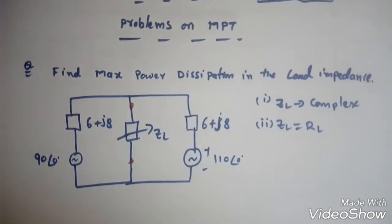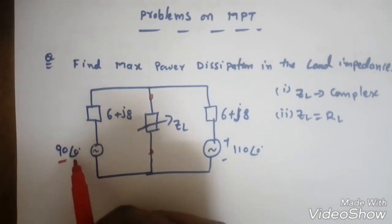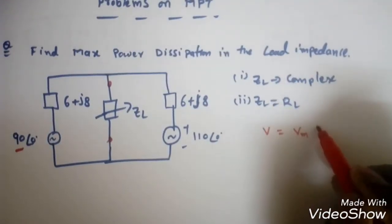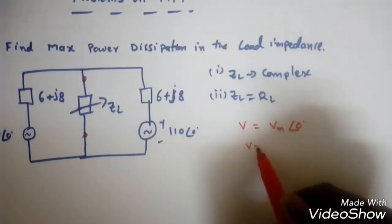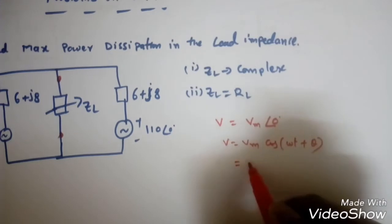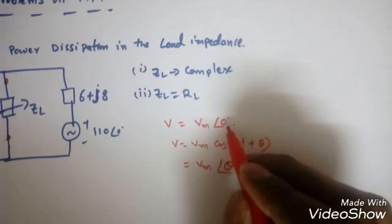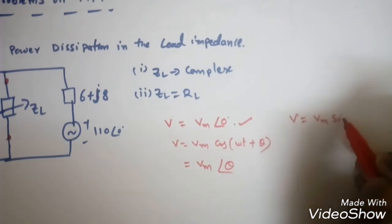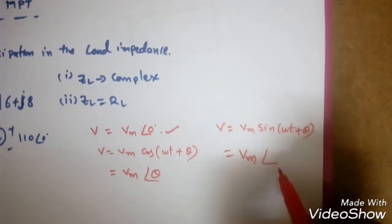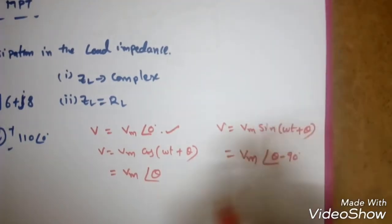To solve this type of question, first we need to find the Thevenin equivalent model. Whenever an AC source is given, remember: if V = Vm cos(ωt + θ), this is represented as Vm∠θ in phasor form. For θ = 0, we get Vm∠0°. If V = Vm sin(ωt + θ), it is represented as Vm∠(θ − 90°). Always remember: sine gives θ − 90°, cosine gives θ directly.